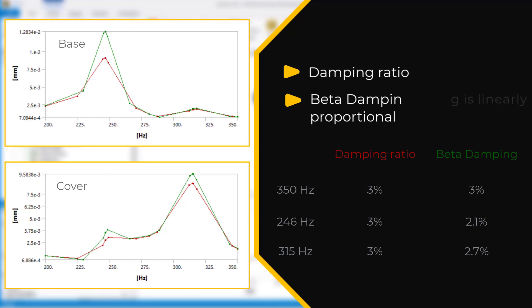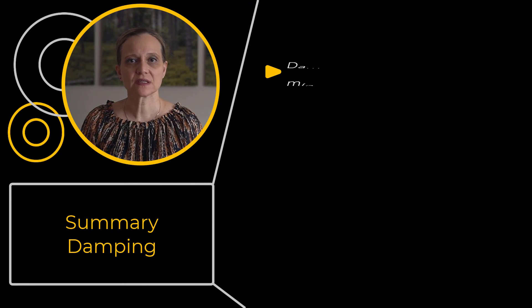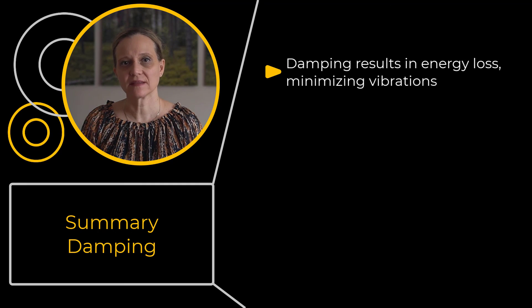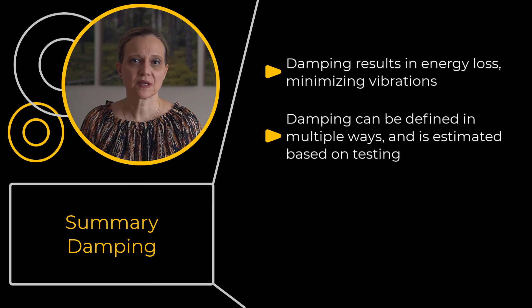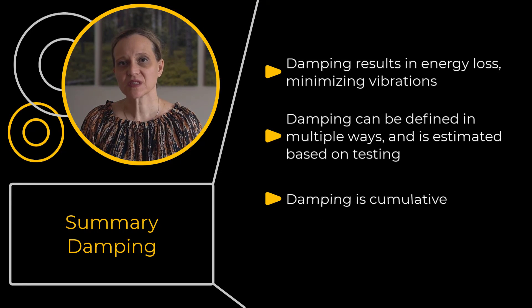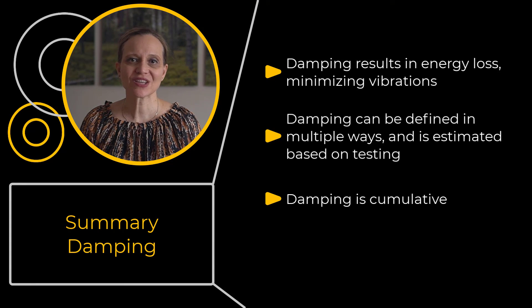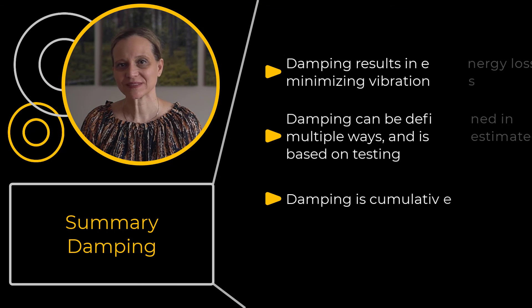This completes the demo. Let's summarize. Damping results in energy loss, which minimizes vibrations, and thus it is critical for protecting the system in any dynamic analysis. In ANSYS Mechanical, damping can be defined in different ways, and we estimate it based on testing or other industry methods. In both Full and MSUB methods, the damping is cumulative, meaning that one form of damping does not override the other but rather adds to it. I hope you found this video informative. Thank you for watching, and do check out our other courses to discover more useful learning resources.